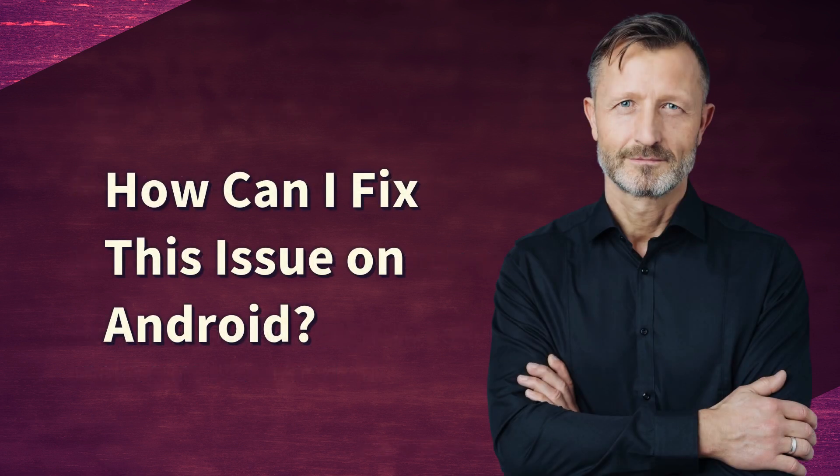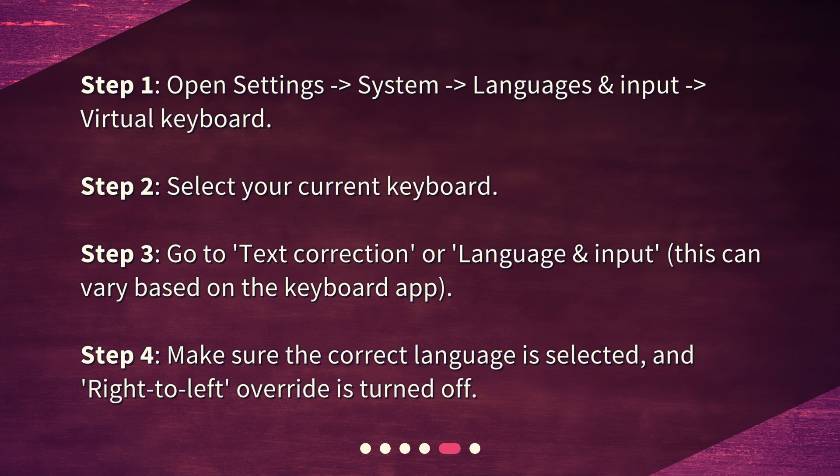How can I fix this issue on Android? Step 1: Open Settings, then System, then Languages and Input, then Virtual Keyboard. Step 2: Select your current keyboard. Step 3: Go to Text Correction or Language and Input — this can vary based on the keyboard app. Step 4: Make sure the correct language is selected and Right-to-Left Override is turned off.